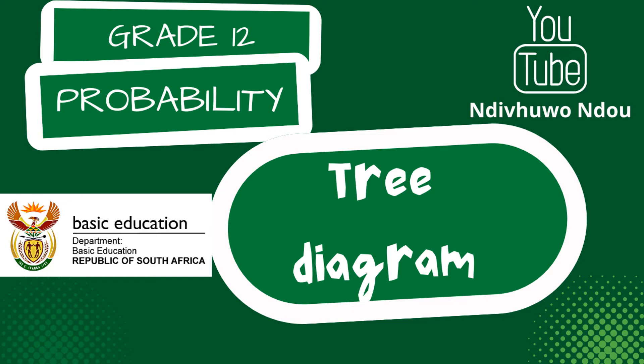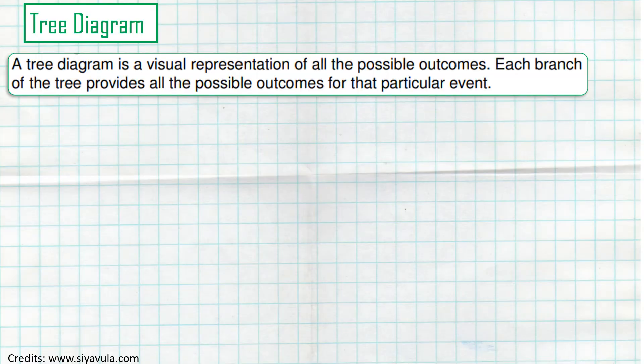Hi, great talks — thank you very much for joining me in this session. We're going to start with a tree diagram; it's going to be a very short lesson. A tree diagram is basically a visual representation of all the possible outcomes in a particular event, displayed as branches of a tree that provide the possible outcome for that event.